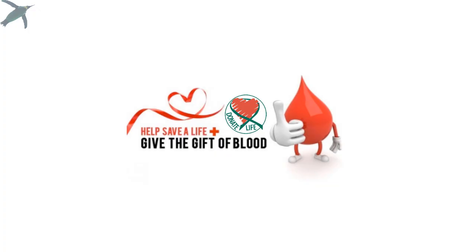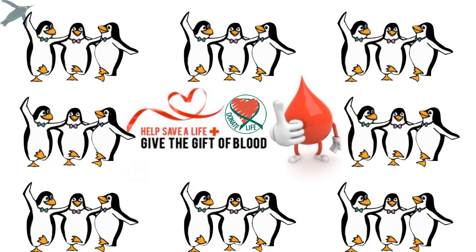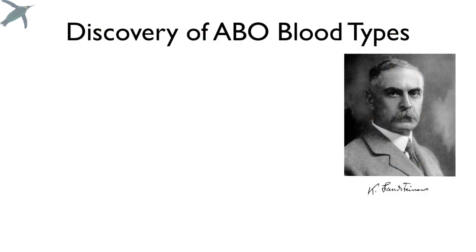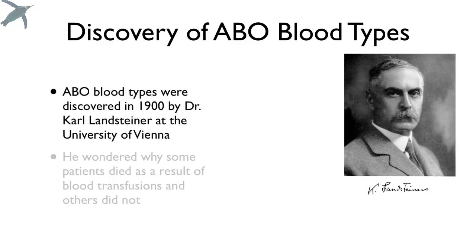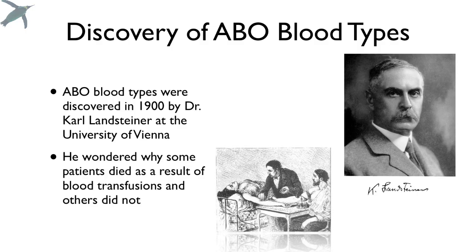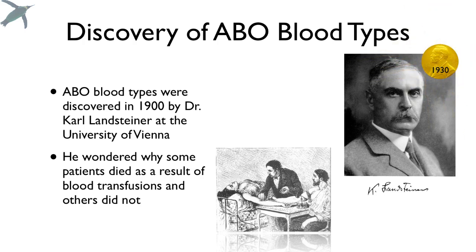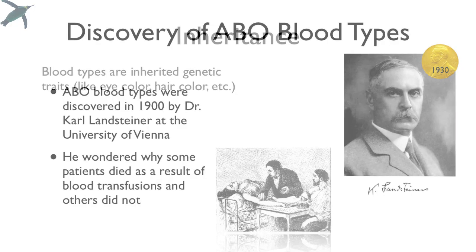And then you don't have to memorize anything. One quick request — if you can, please donate and give the gift of life. One blood donation can save several people. Just a tiny bit of history here: these blood groups were discovered in around 1900 by Karl Landsteiner. He wondered why some people were saved as a result of blood transfusion, but some patients died. He received the Nobel Prize for this work in 1930.